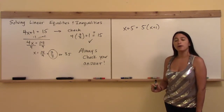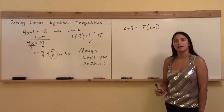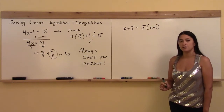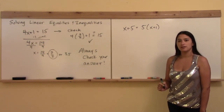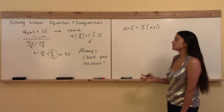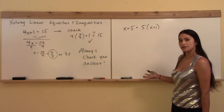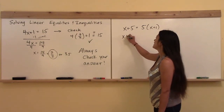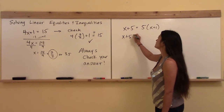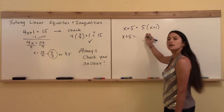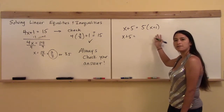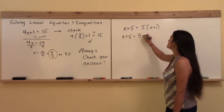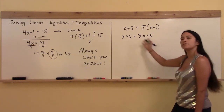Go ahead and pause the video and try this, then unpause it and I'll give you the answer. Let's see how you did this one. I'll go through it step-by-step. I'm going to leave this side alone at first. Focusing on this side, I'm going to factor it out. So that gives me 5x plus 5.